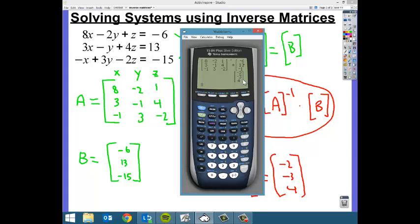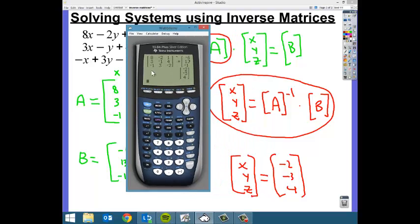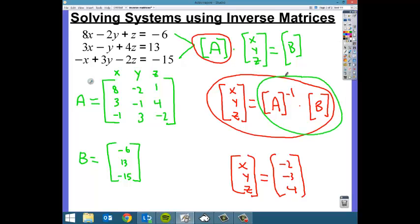So we get the same solution two different ways. This method is actually just so important that you understand. Really, the most important thing to remember is how to input matrices in the calculator and this relationship here. You've got to remember that the inverse of A times B is how you're going to set this up and solve it. So remember that, practice this, and you're going to do awesome. I'll catch up with you later.